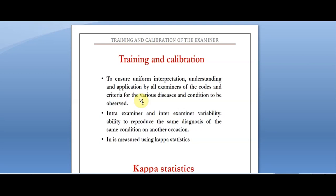While doing training and calibration, we need to establish intra-examiner and inter-examiner reliability. This means each person must be able to reproduce the same results on repeated performance. Mr. A has to produce consistently repeated results, and similarly Mr. B. Checking the consistency within the same person — for example within Mr. A or Mr. B — is known as intra-examiner reliability. Checking reliability between Mr. A and Mr. B is known as inter-examiner reliability.